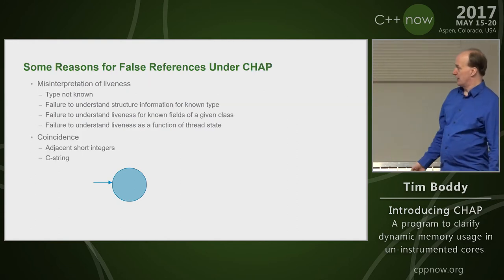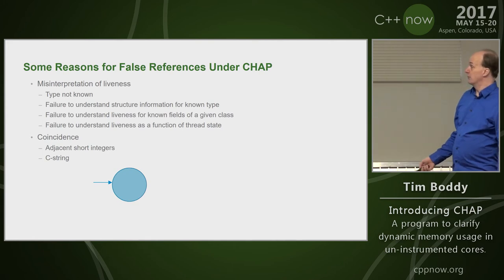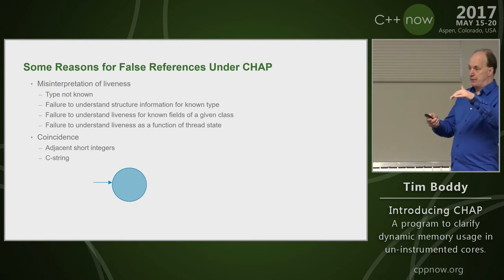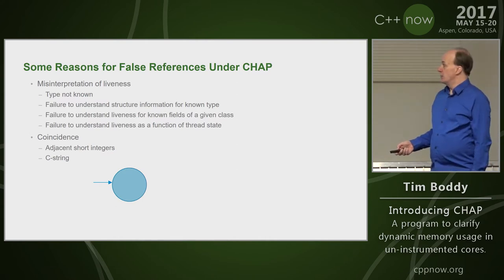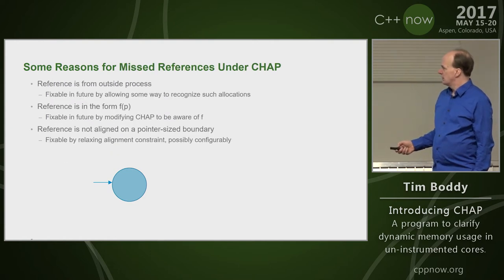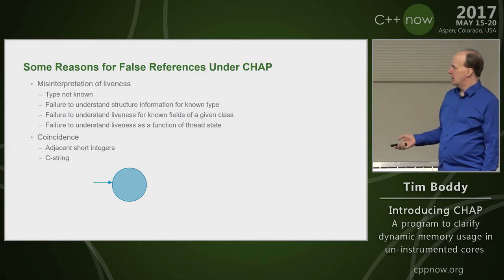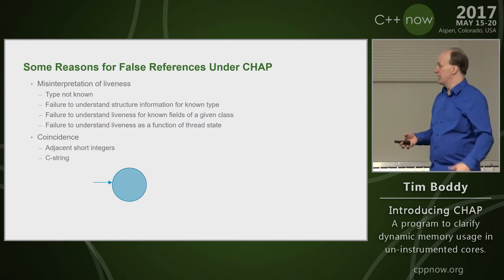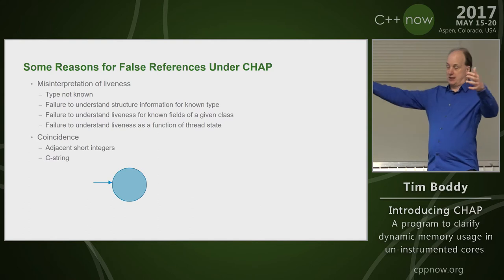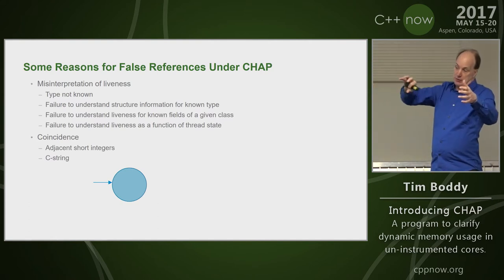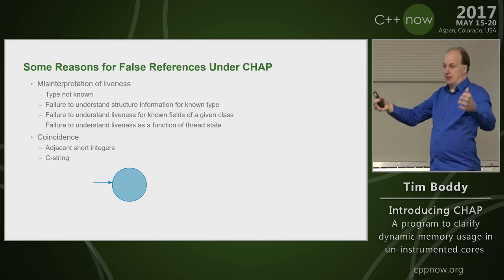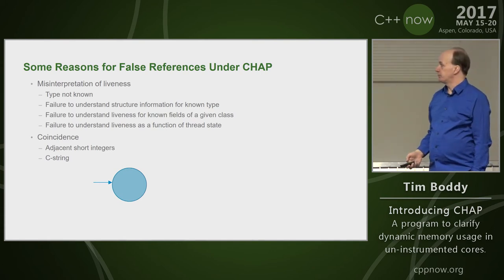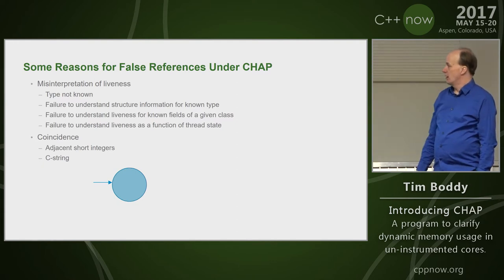There are a lot of reasons for false references under CHAP right now. CHAP doesn't know much about liveness — it would need DWARF information to know which registers are live at a particular point in any given thread. It may not know the type at all. It definitely doesn't understand any structure information right now because it's only looking at the core, not the DWARF information. If you have a structure with a big array of bytes, and leftover from some previous allocation there's something that looks like a pointer, CHAP will consider that to be an edge.